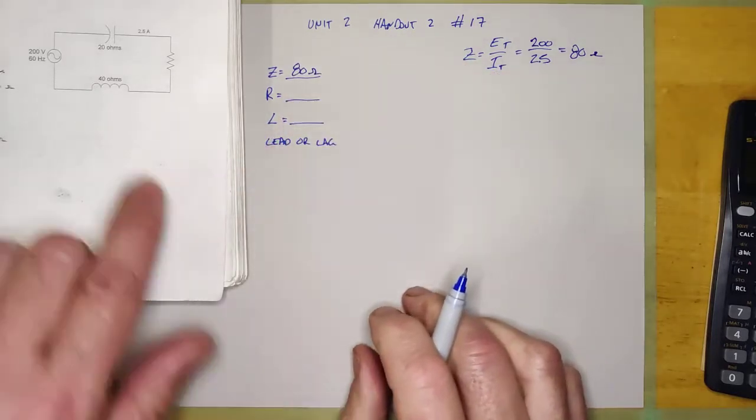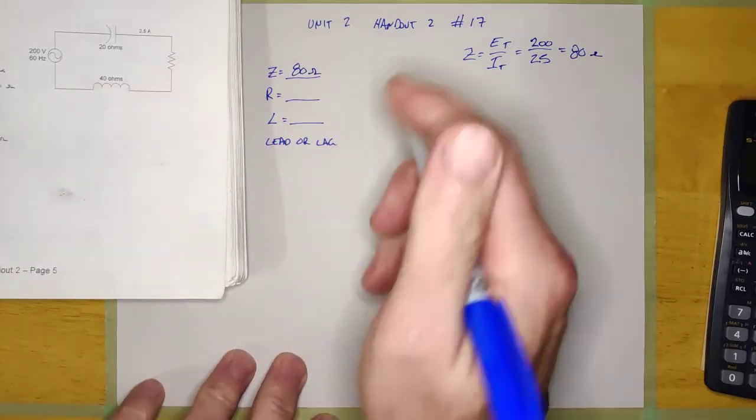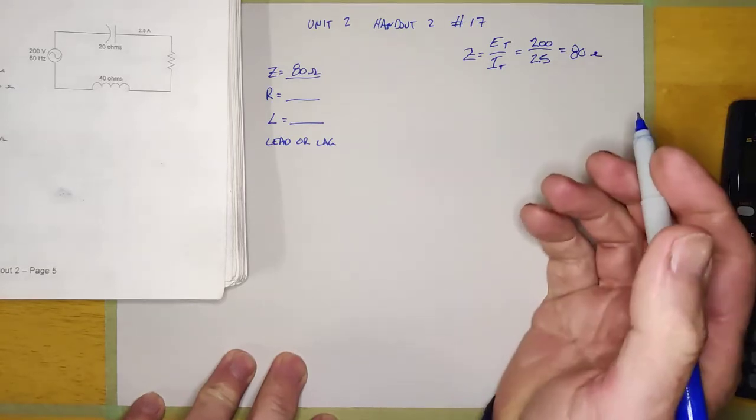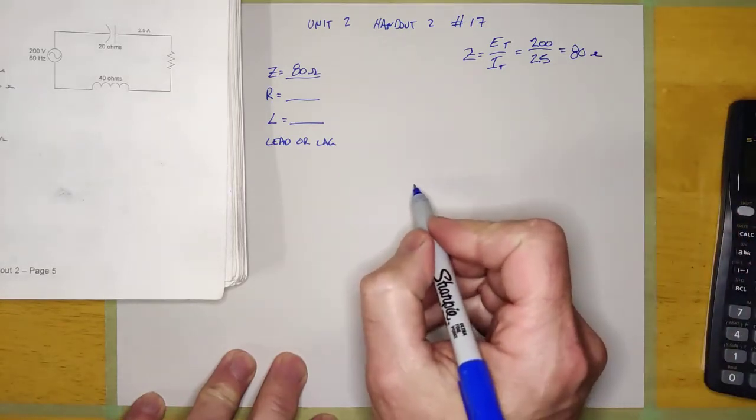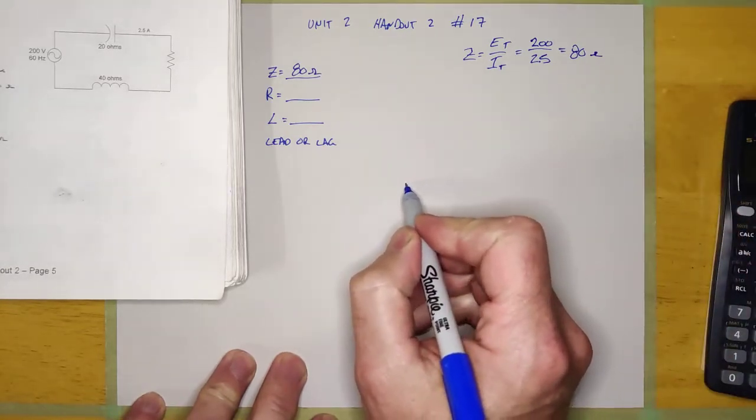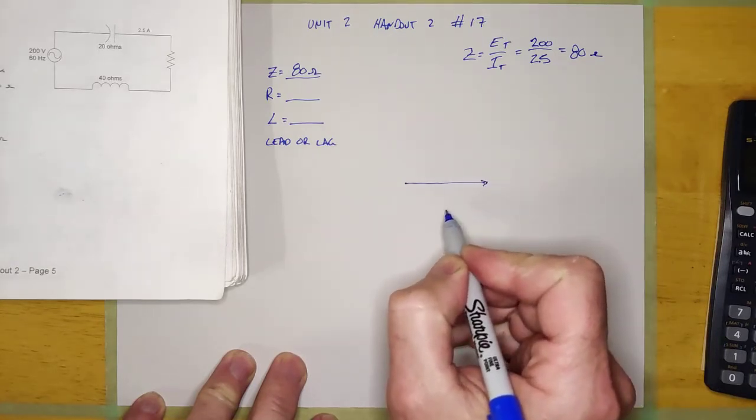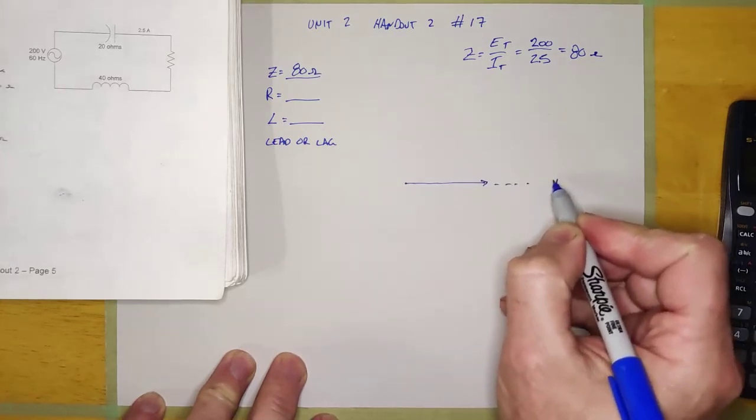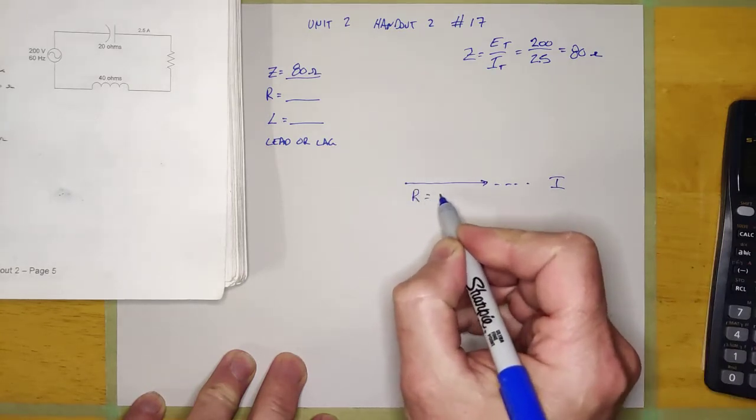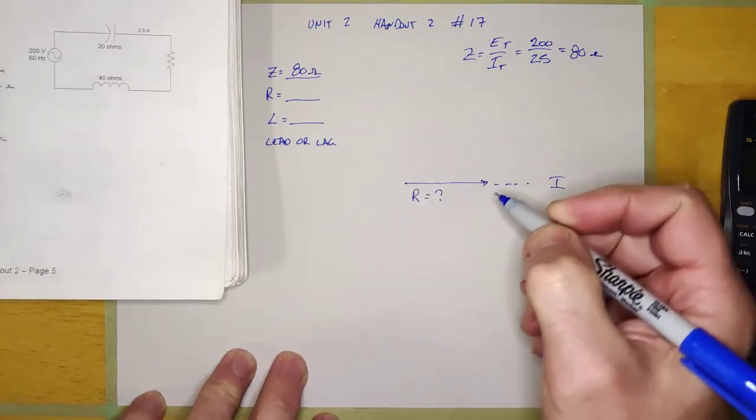But now we've got to try to calculate R, unknown. So I'm going to use phasors to try to figure that out, and so I'm going to start to draw the phasors. Now, I don't know how big R is, but I do know it's in phase with the current, so this is R, and I don't know how long it is,